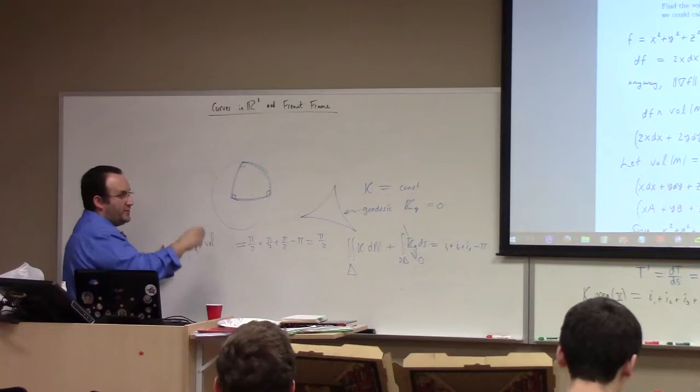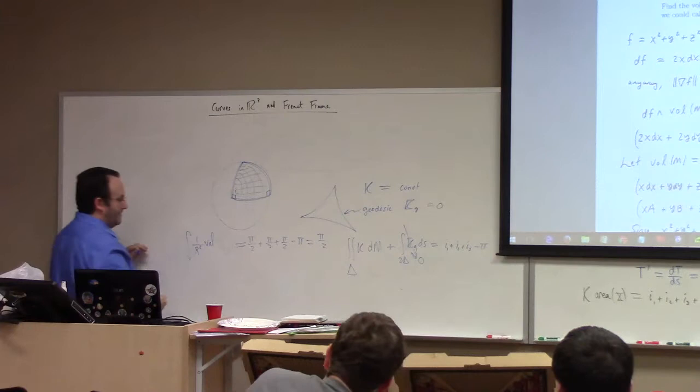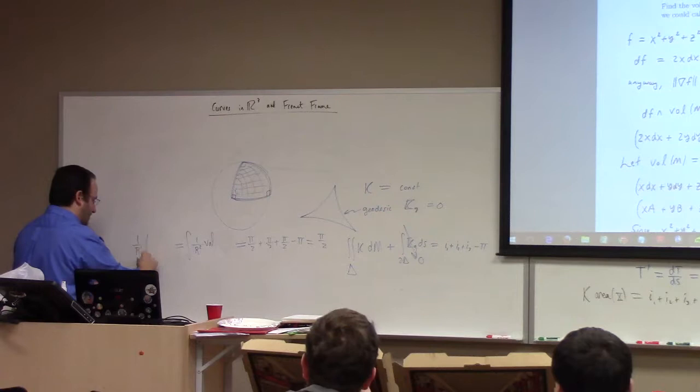The volume form just gives you the area over that part. The total surface area is 4 pi r squared.